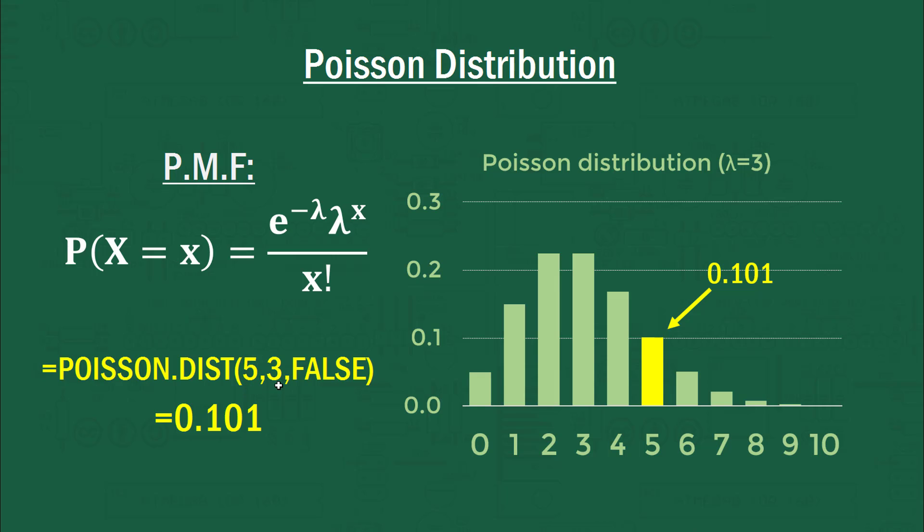The second argument requires the mean for the poisson distribution. In this case, that's three. And the third argument requires you to tell it whether you want the cumulative distribution, which is called the CDF, or whether you want the probability mass function, the PMF. And of course, we want the latter. So to write false, that tells it that we don't want the cumulative distribution, we want the PMF. So it'll give us 0.101 as well. So there's a 10% chance, roughly 10.1% chance of getting five events occurring in this time interval.